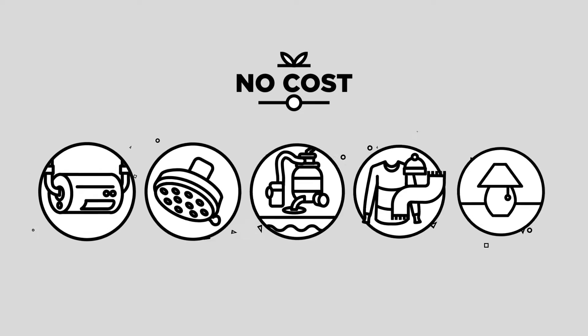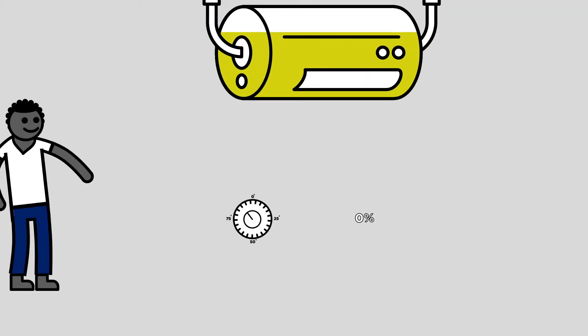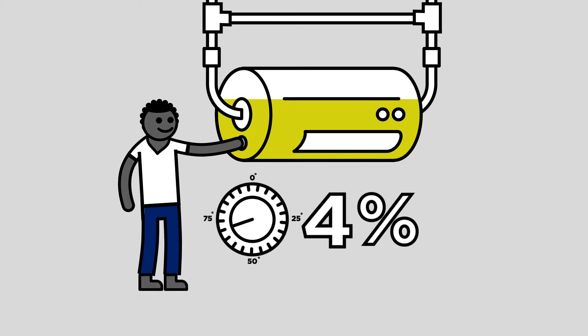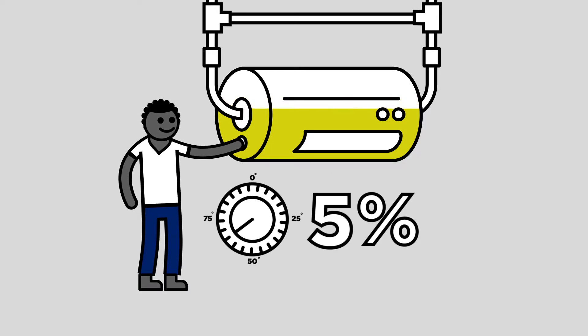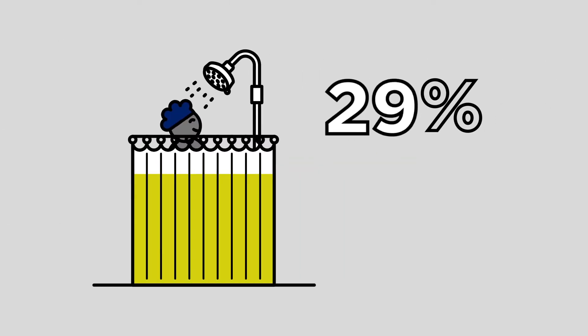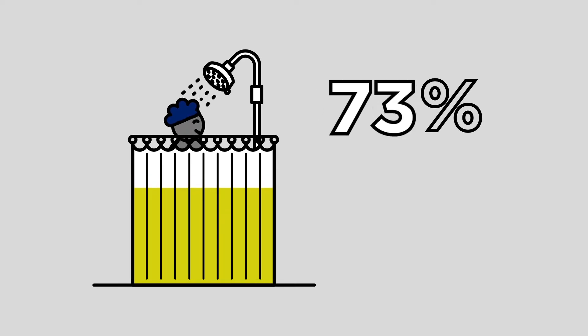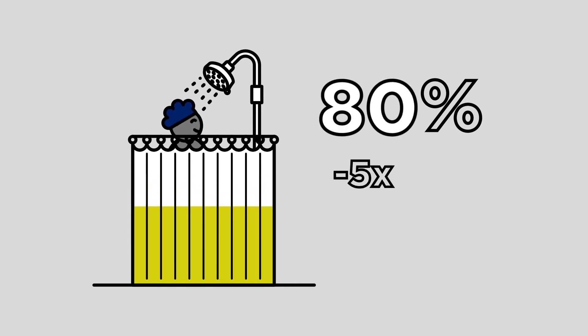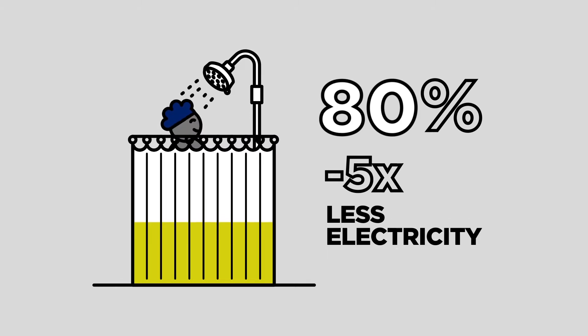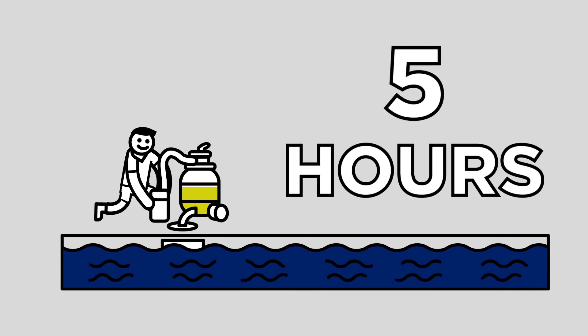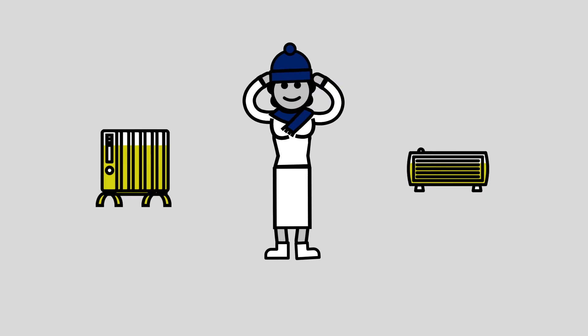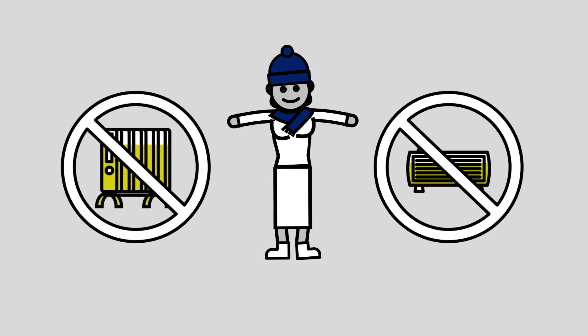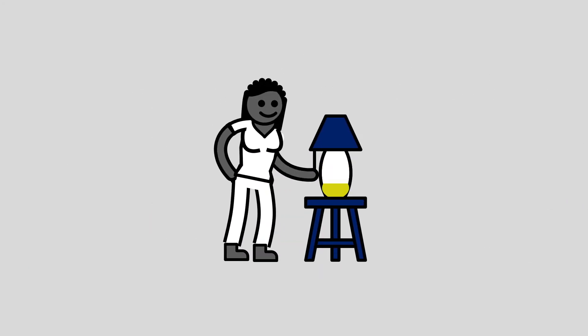Here are some no-cost measures: turning your geyser temperature down to 60 degrees Celsius will see a 5% reduction in your electricity bill; showering instead of bathing will save you up to 80% in water and use 5 times less electricity; setting your pool pump to run for fewer hours; putting on warm clothes instead of turning on heaters; turning off lights that aren't needed.